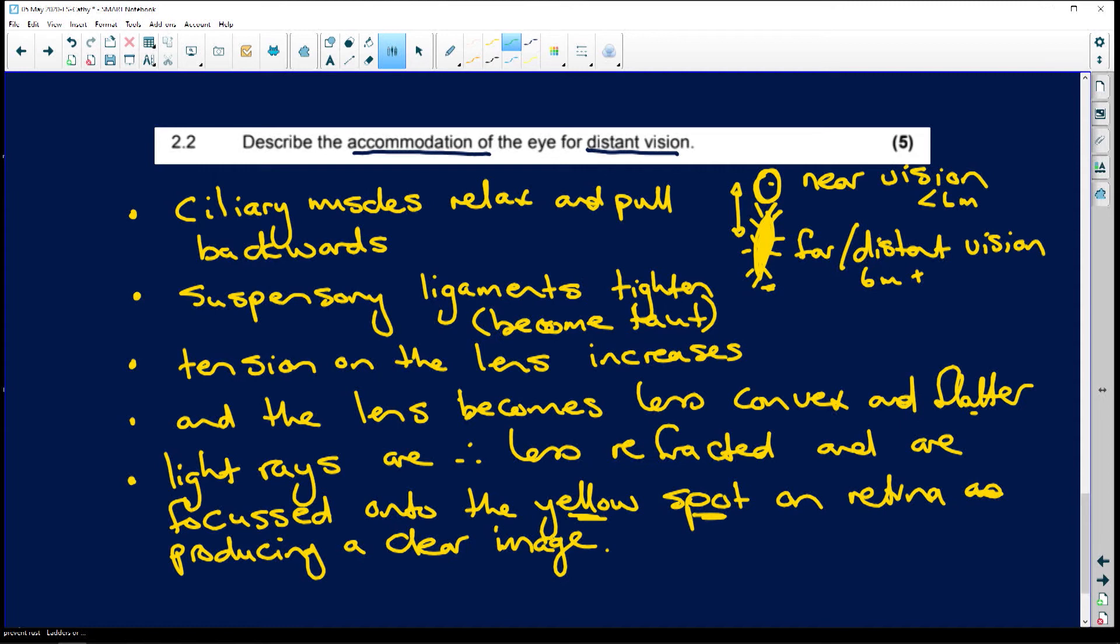Now I said to you that you can change this around, so let's do it in green. When it is for near vision, the ciliary muscles contract - so it's the opposite - and they pull forwards. The suspensory ligaments slacken. OK? Tension on the lens decreases.